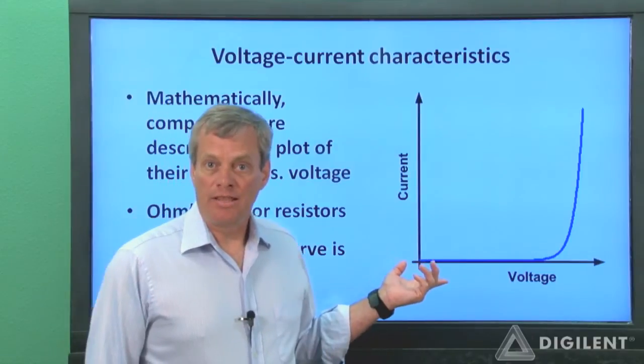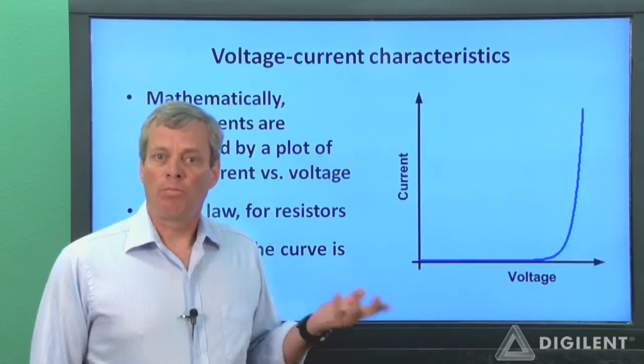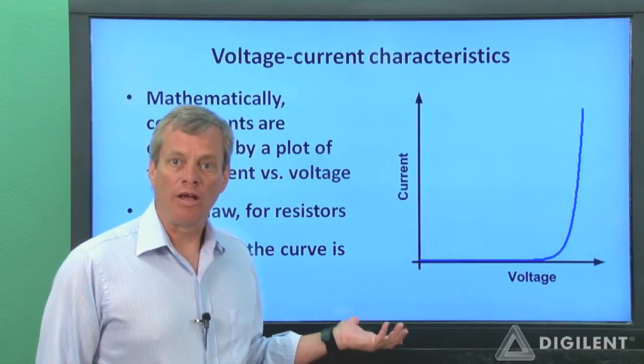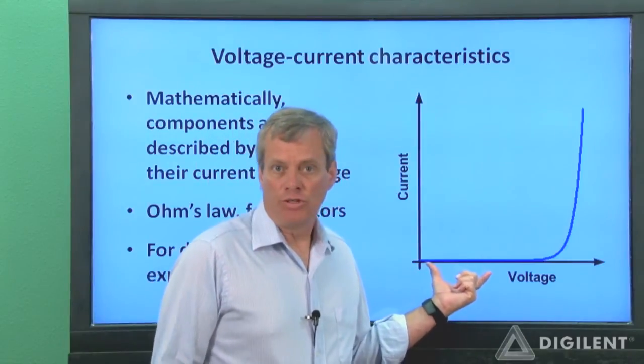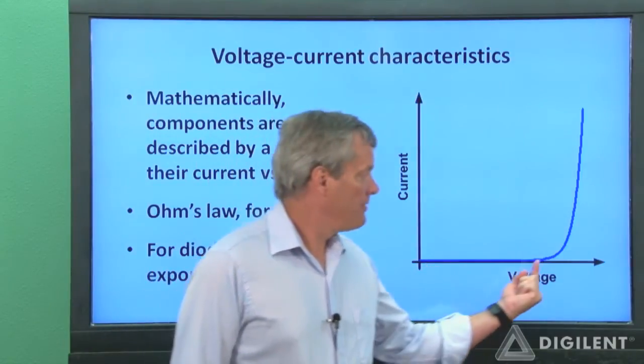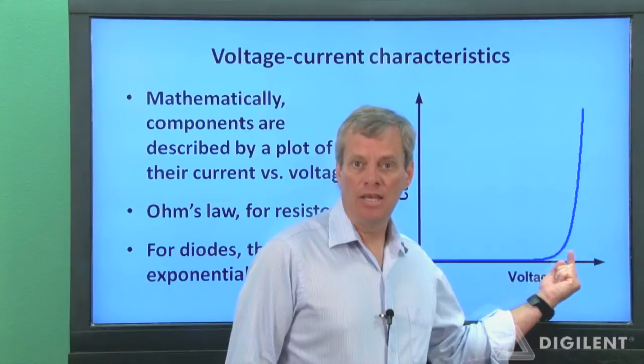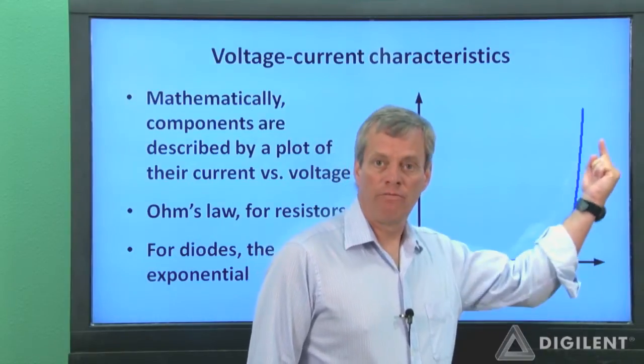The shape of the curve is like this. This backs up our previous description of how diodes work. At low voltages, virtually no current goes through the diode. Above some threshold voltage, maybe in here, the diode flows current very readily.